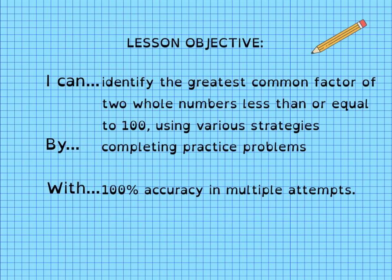Pause again while you write today's lesson objective in your interactive student notebook. I can identify the greatest common factor of two whole numbers less than or equal to 100 using various strategies by completing practice problems with 100% accuracy in multiple attempts.